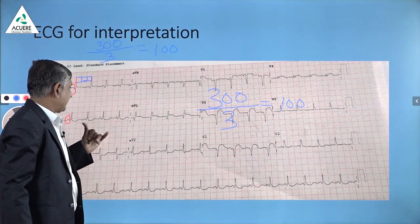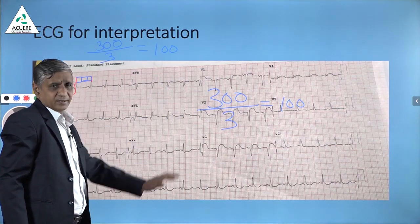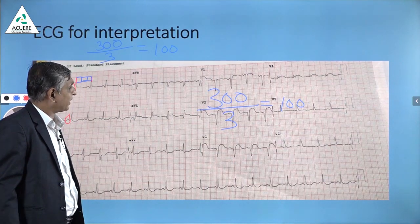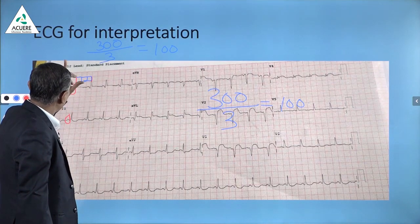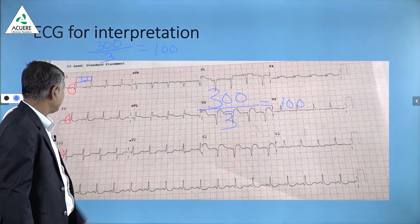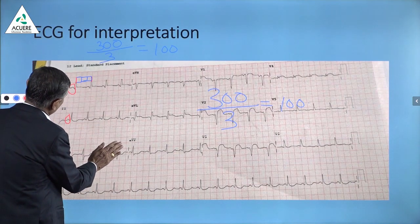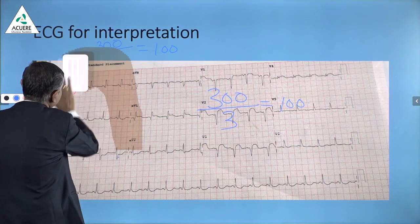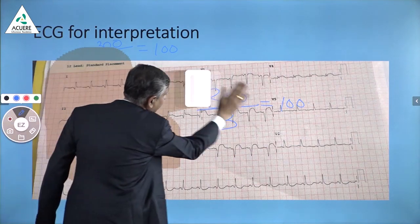The heart rate is about 100, which is on the cutoff value for tachycardia. You may not call it tachycardia, but yes — the heart is beating in sinus rhythm and the heart rate is 100.